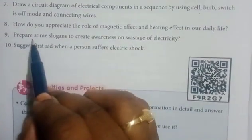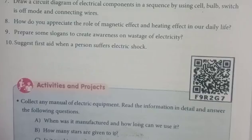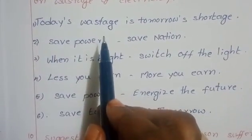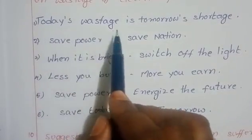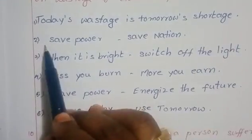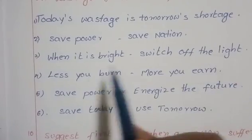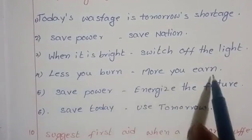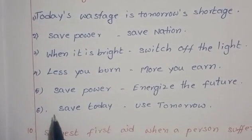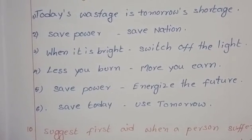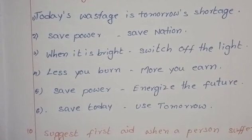9th question: Prepare slogans to create awareness about wastage of electricity. Some slogans: 'Today's wastage is tomorrow's shortage.' 'Save power, save nation.' 'When it is bright, switch off the light.' 'Less you burn, more you earn.' 'Save power, energize the future.' 'Save today, use tomorrow.'